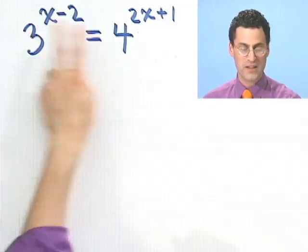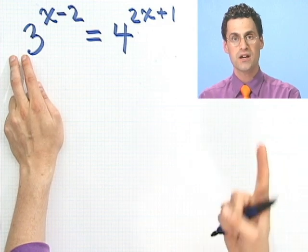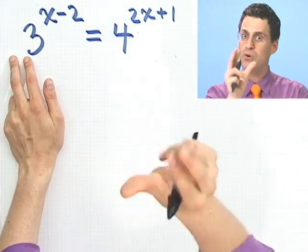Now how do you get down? Well, if I took the logarithm of both sides, then I could use that property to pull things out in front. Then exponents become coefficients. So whenever you want an exponent to become a coefficient, whenever you want an unknown that's in the exponent to be able to be usable, just take logs of both sides.